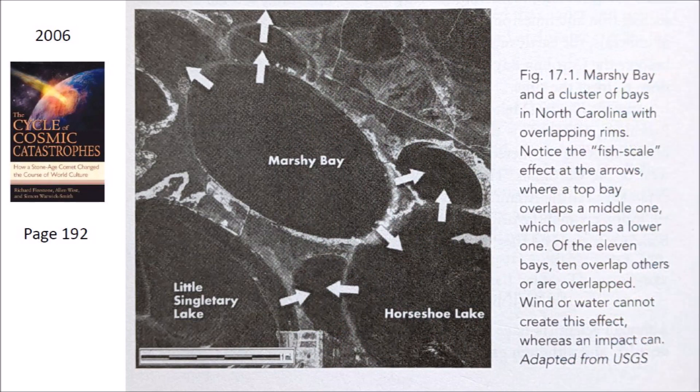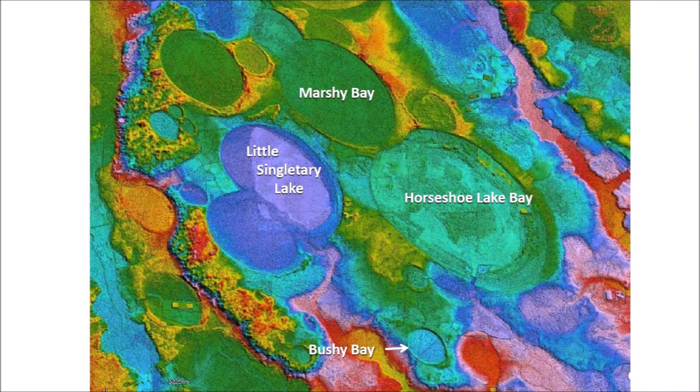In 2006, the book by Richard Firestone, Allen West, and Simon Warwick-Smith introduced the Younger Dryas Impact Hypothesis and brought attention to Marshy Bay and a cluster of bays in North Carolina with overlapping rims, including Horseshoe Lake Bay. The book says: "Notice the fish-scale effects at the arrows, where a top bay overlaps a middle one which overlaps a lower one. Of the eleven bays, ten overlap others or are overlapped. Wind or water cannot create this effect." A LiDAR image of the area described in Firestone's book shows that Bushy Bay is near this very interesting area of overlapping bays.